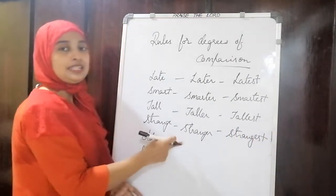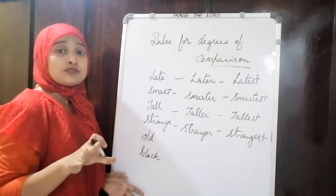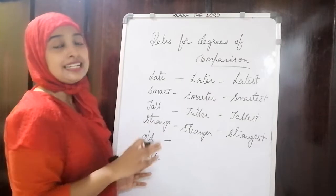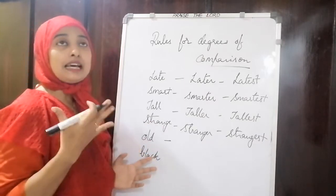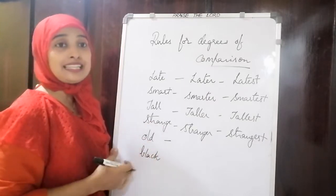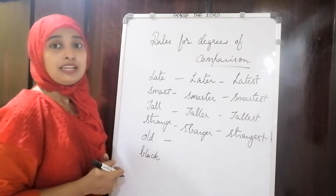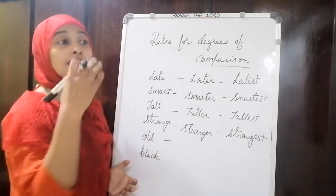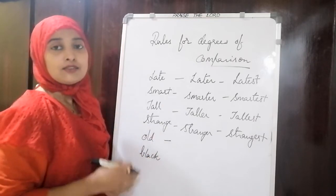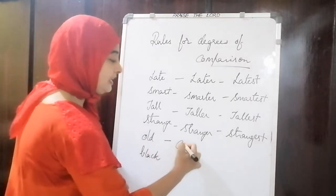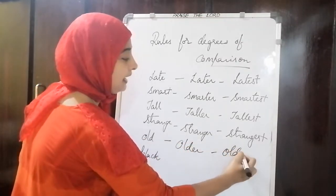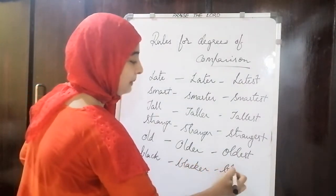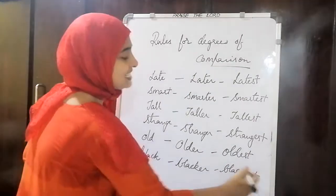Similarly, 'strange' becomes 'stranger' and 'strangest'. Note that this 'stranger' is not about a person — it is about intensity, describing an emotion. For example: 'Some strange things happen — it is much stranger' or 'This is the strangest thing I have seen.' Also, 'old' becomes 'older' and 'oldest'; 'black' becomes 'blacker' and 'blackest'.